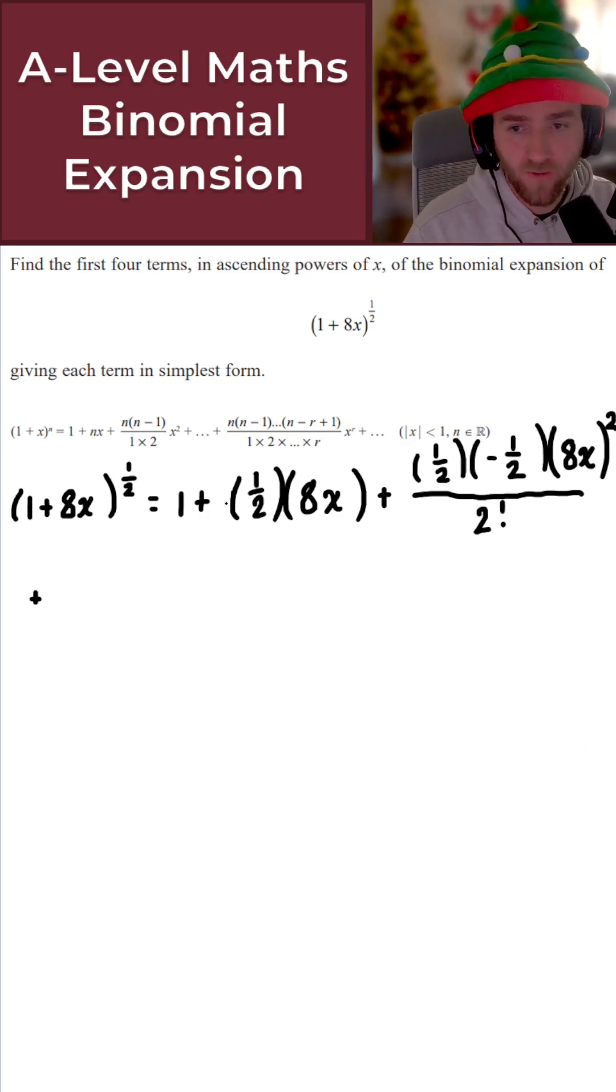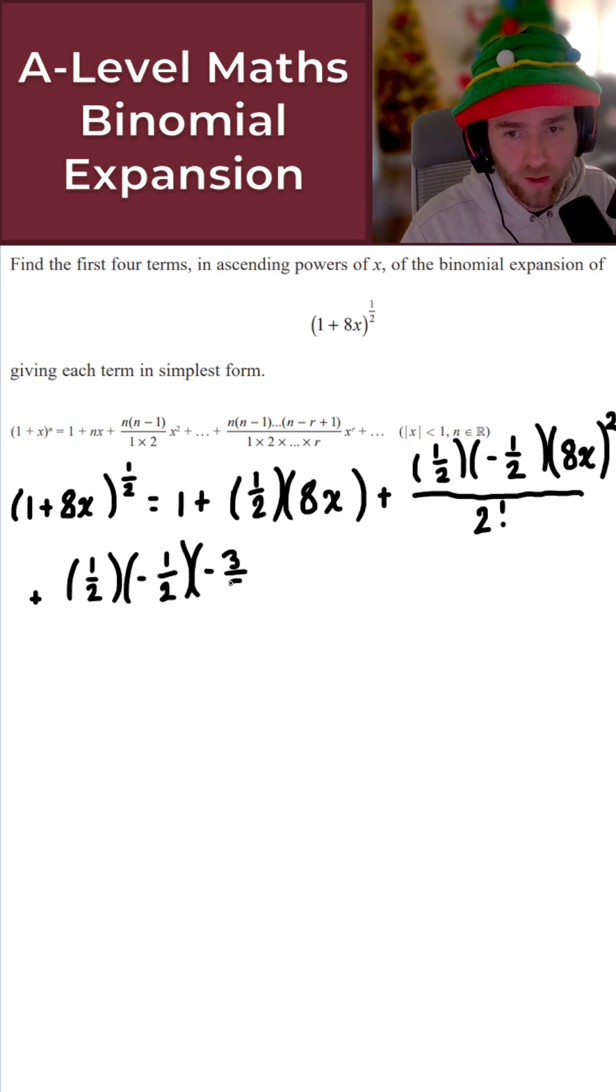And then finally, for the fourth term, it's going to be N times N minus 1 times N minus 2 times X cubed all over 3 factorial, 1 times 2 times 3. So let's just write all that down. 1 over 2 times minus 1 over 2 times minus 3 over 2. And apologies that I couldn't fit it all in on one line. We times that by 8X all cubed, just like that. And this here is all over 3 factorial. Perfect.